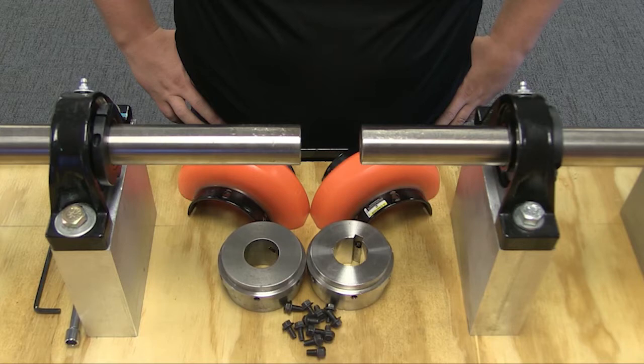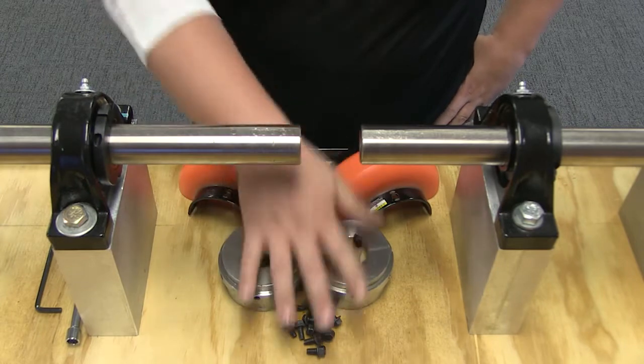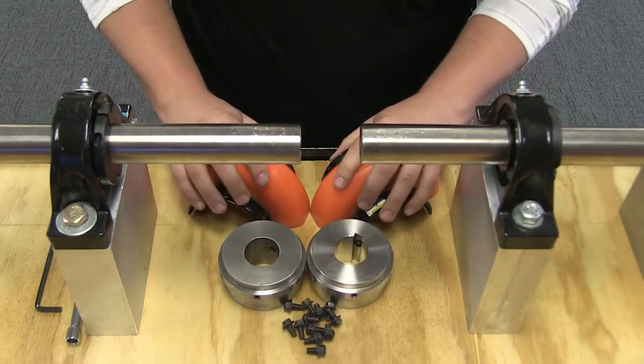Due to its simple design, there are just a few components to work with when installing the Omega coupling: two hubs, two element halves, and the necessary hardware.